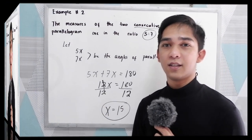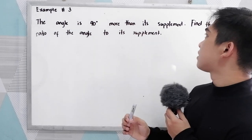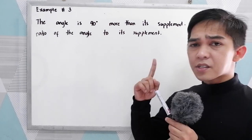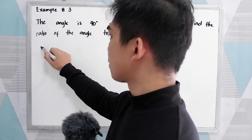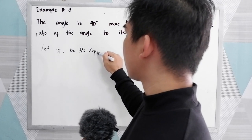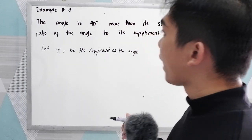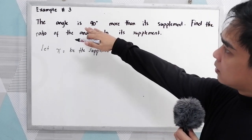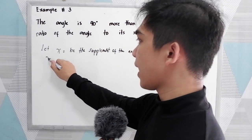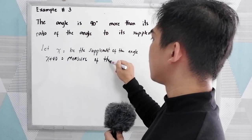Now let's have example number three. An angle is 40 degrees more than its supplement. Find the ratio of the angle to its supplement. First step: let x be the supplement of the angle, and x plus 40 be the measure of the angle.